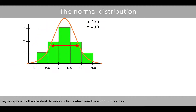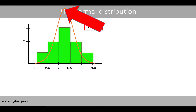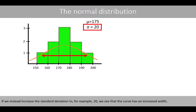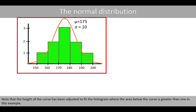Sigma represents the standard deviation, which determines the width of the curve. If we reduce the standard deviation to, for example, 7, the curve has a reduced width and a higher peak. If we instead increase the standard deviation to, for example, 20, the curve has an increased width but a much lower peak. It is clear from changing these two parameters that certain values create a curve that fits quite well to the bars of the histogram.